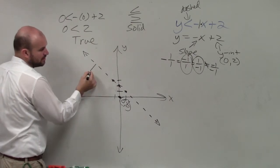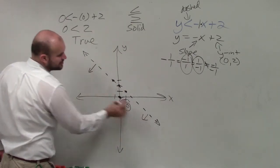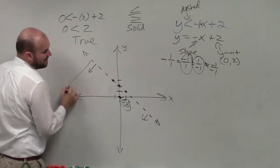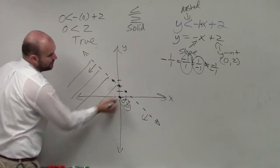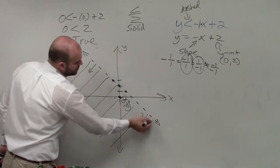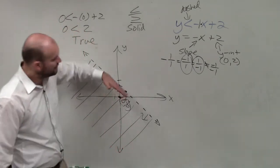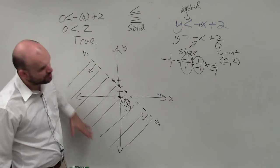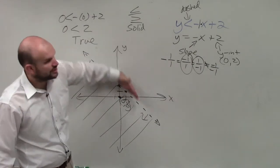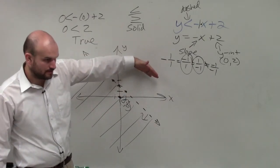So therefore, if my test point is true and it's below my line, that means all the points below the line are also true. So that's where you shade. If it was false, that means all the points below are false, and you'd shade above.